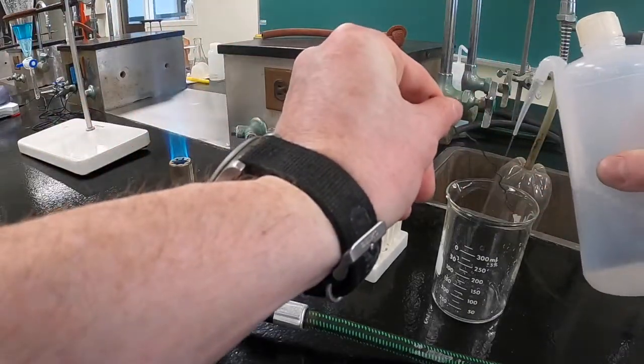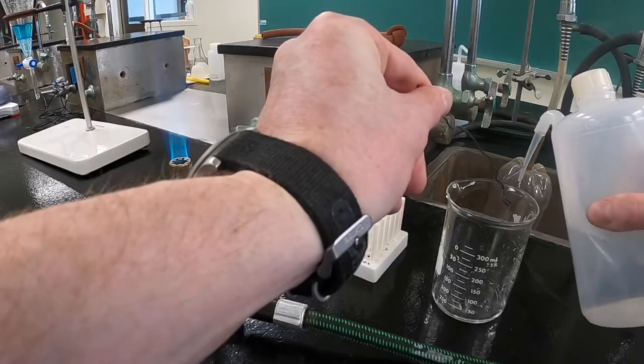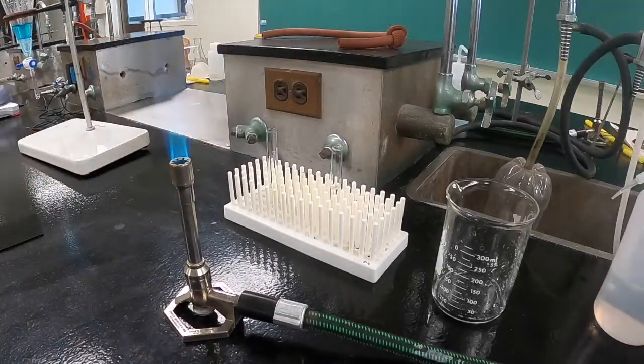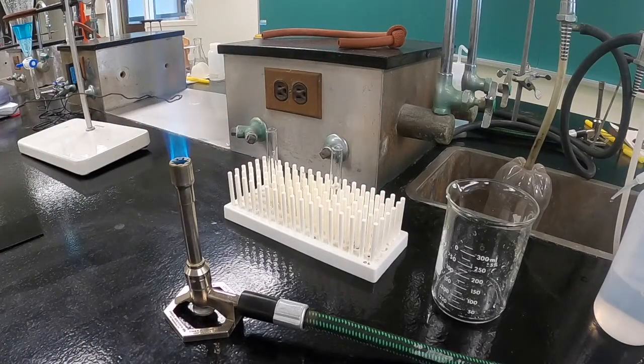Once you've finished testing your sample, you should rinse your wire with distilled water and then hold the wire into the flame to make sure that the color stabilizes again before going on to test your next sample.